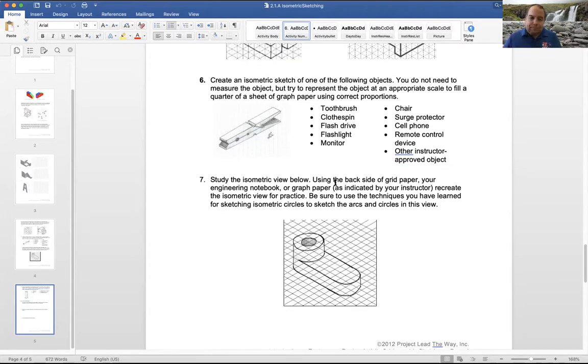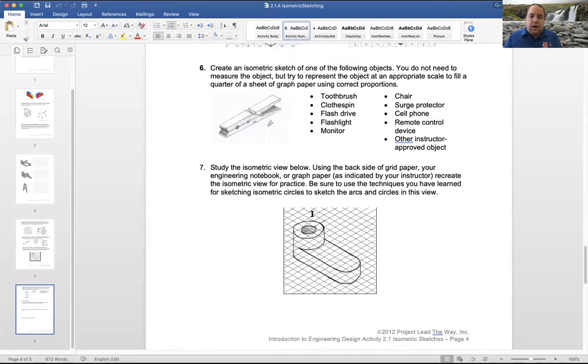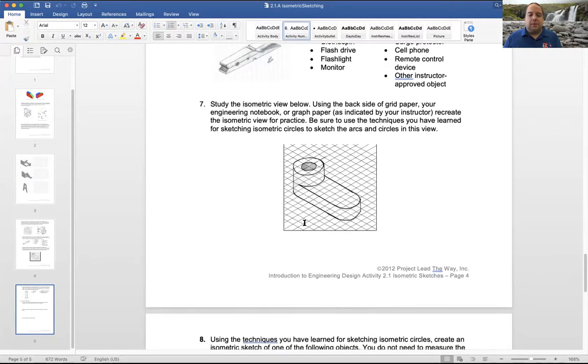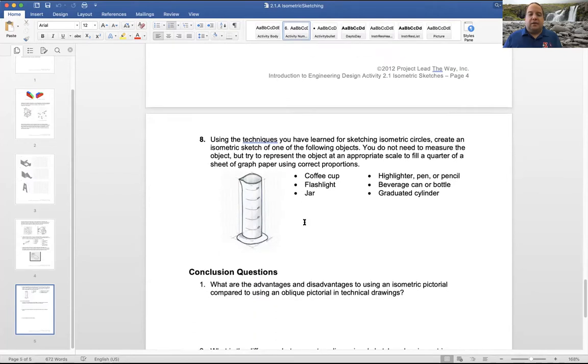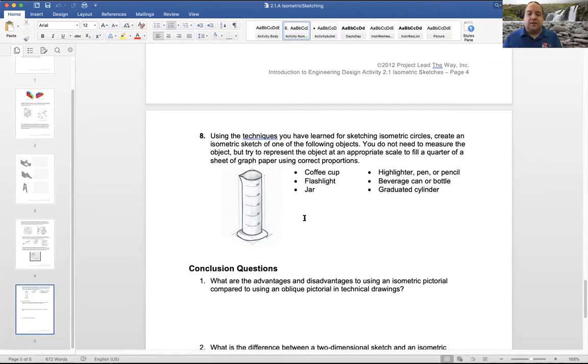As we scroll down, I'm going to have you do item number seven here. So you're just recreating this shape on your isopaper. And then item number eight, you can select any of these items from the list. But I would like you not to do the graduated cylinder because that one's already done for us. So you could do a coffee cup, a flashlight, a jar, highlighter pen or pencil, beverage can or bottle. And a graduated cylinder, that one's already done, so we're going to take that one off of the list.